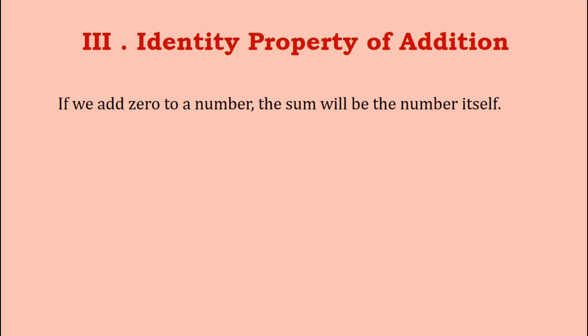Let us understand this property with an example. If we add 386 to zero, we get the sum as 386. Or, if we add zero to 386, we get the number itself, that is 386.